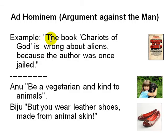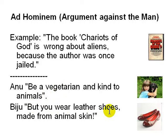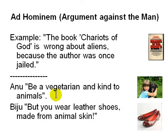For example: 'The book Chariots of the Gods is wrong about aliens because the author was once jailed.' In this case you are attacking the person who wrote the book, not the logic of the book. This is very common in politics and newspapers — they attack the character of a person and not the argument. Another example: 'Be vegetarian, be kind to animals, Anu — but you wear leather shoes made from animal skin.' Attacking Anu personally is no way connected to whether being vegetarian is good. You must separate the person from the argument.